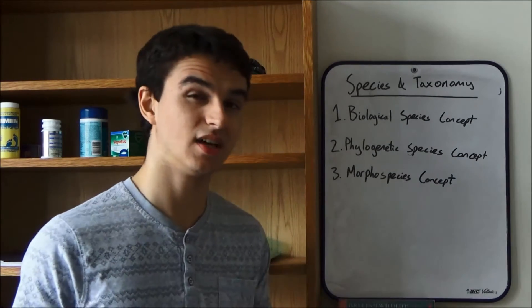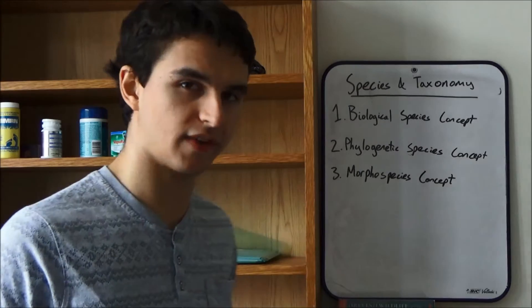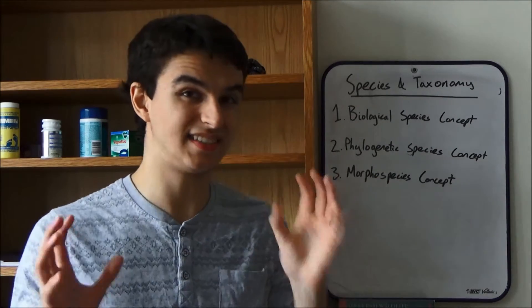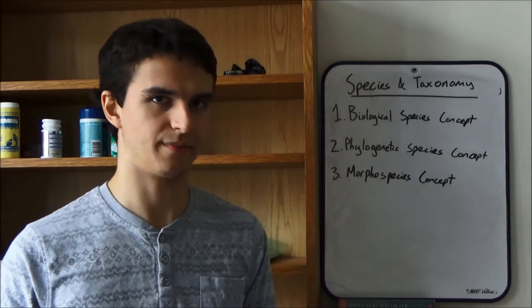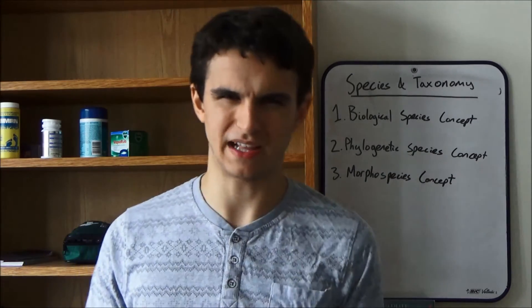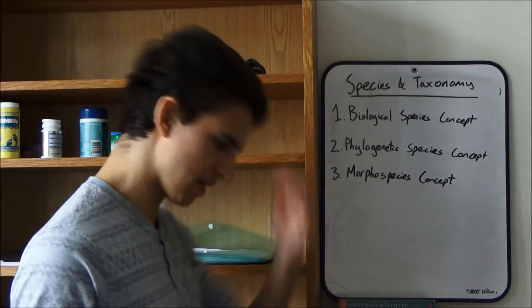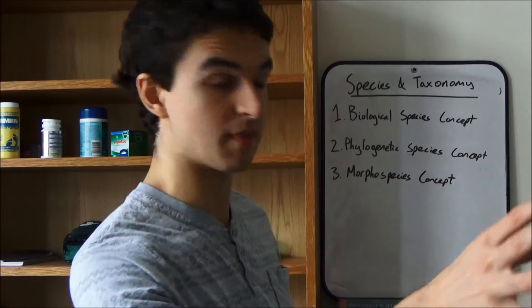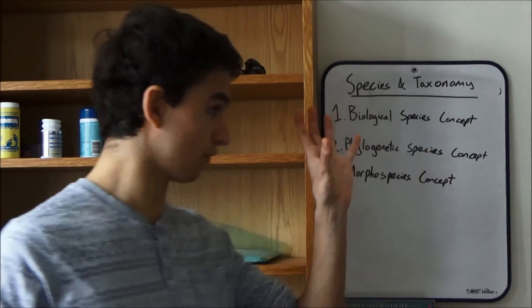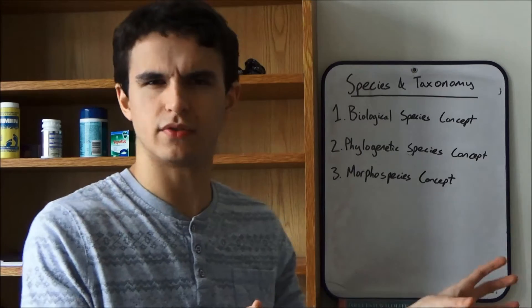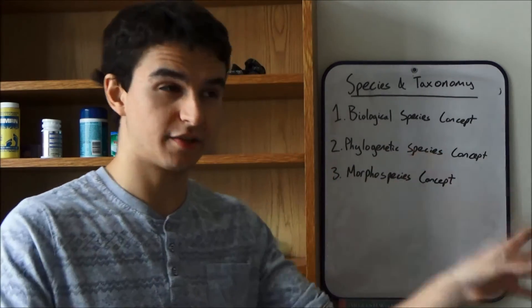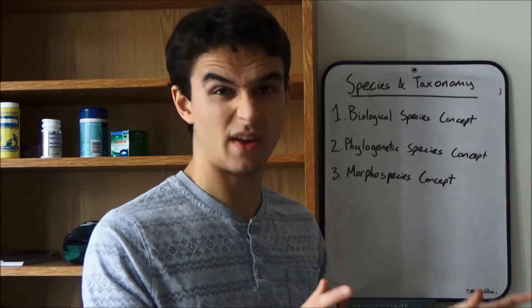A species may be polymorphic — that's when the male and female look significantly different from each other. So that may confuse the palaeontologist, because the morphological features of the female and the male are quite different, and under the morphospecies concept you might think they're two separate species when they're not.